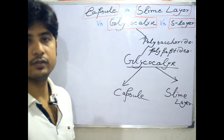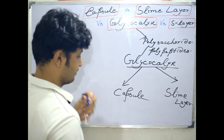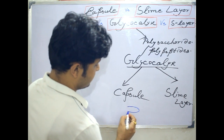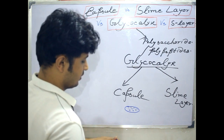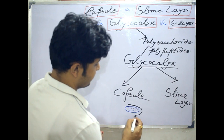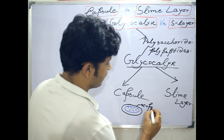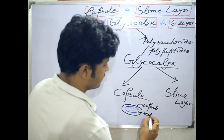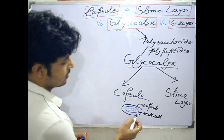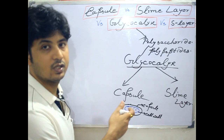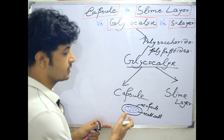I'll draw a picture so it can be easier for you to understand. Suppose this is the bacterial structure — this outer area is the capsule, and this inner region is the cell wall. This area which you are seeing can be easily observed when you stain the bacteria with nigrosin or Indian ink. Through the background staining you can easily observe this kind of capsule.